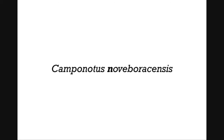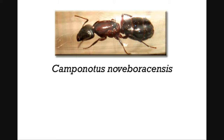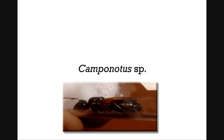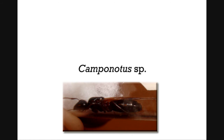Whenever possible, the scientific name should be italicized. The abbreviation 'sp.' is used when the actual specific scientific species name cannot or needs not be specified. For example, Camponotus sp. means an unspecified species of the genus Camponotus. If you find a Camponotus ant and aren't sure of its exact species, you can refer to it as Camponotus sp.